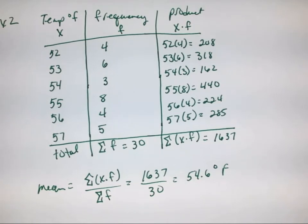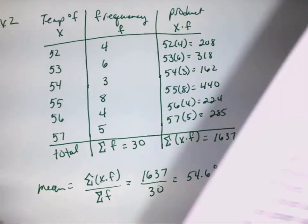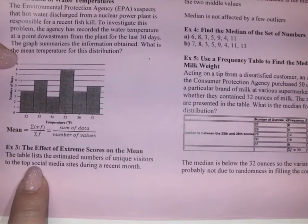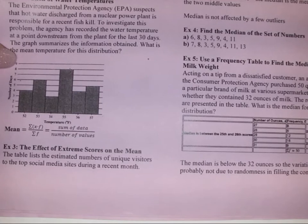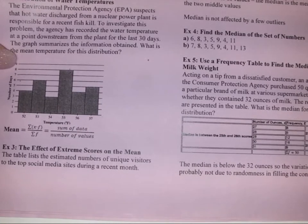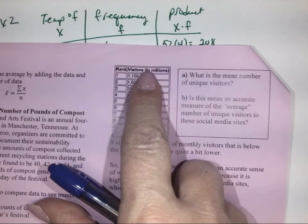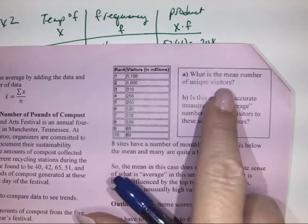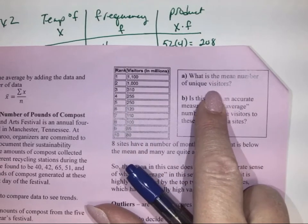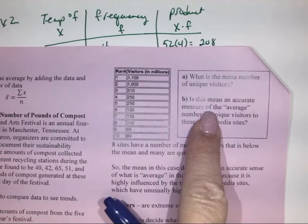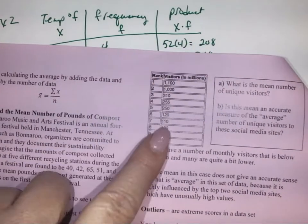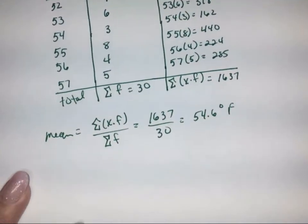Our next example is example three. We're looking at the effect of extreme scores on the mean. The table lists the estimated numbers of unique visitors to the top social media sites during a recent month. We have values from 1100 down to 80. We're going to find the mean of the number of unique visitors and then see if it is accurate.